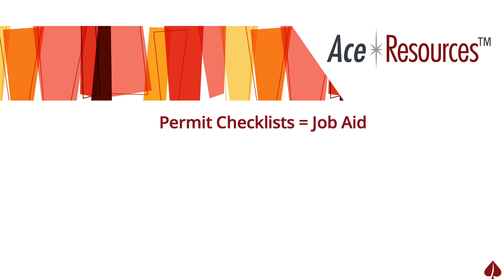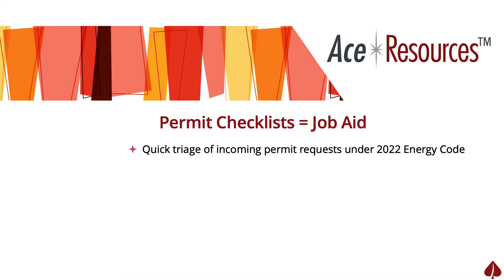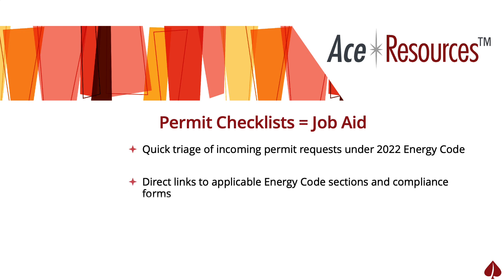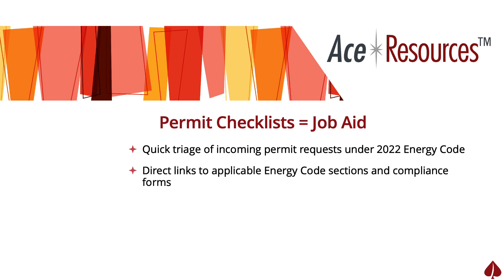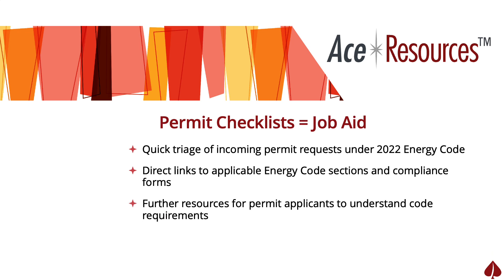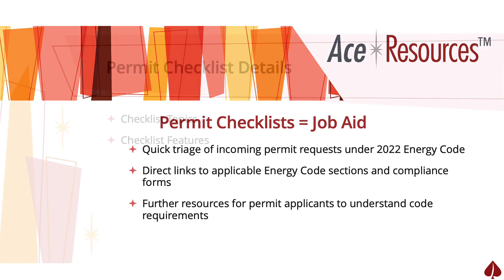Think of the Permit Technician Checklist as a job aid designed for your use in intake and evaluating permit applications for compliance with 2022 Energy Code. As a job aid, they are written to assist you with direct links to applicable Energy Code sections and compliance forms, and further resources for permit applicants to understand code requirements. In fact, you can print out an extra copy to hand out directly to customers asking for more information.